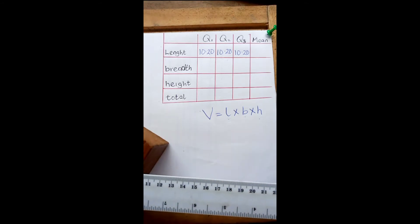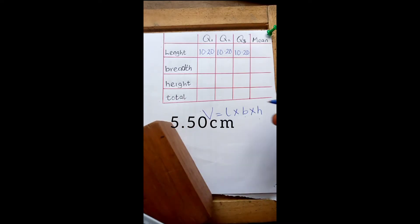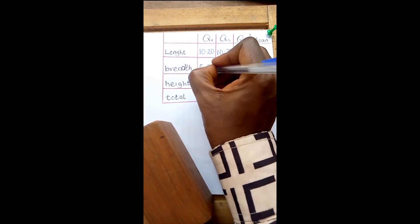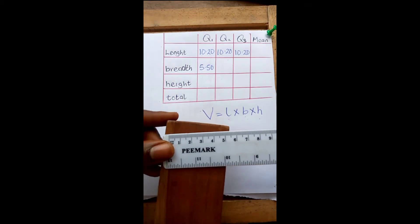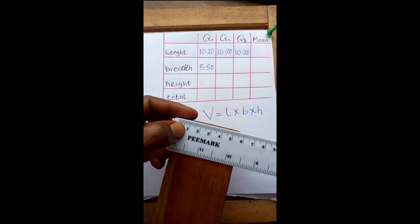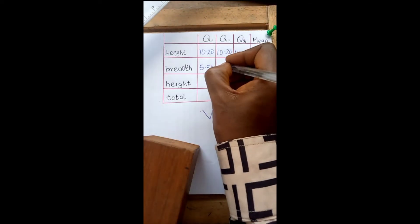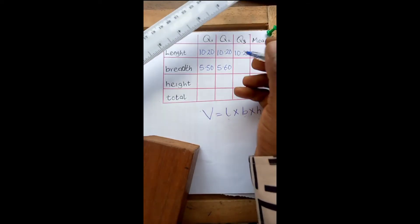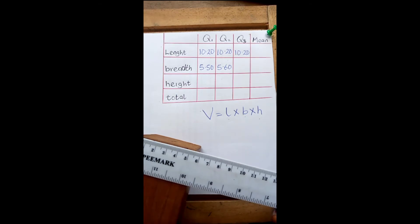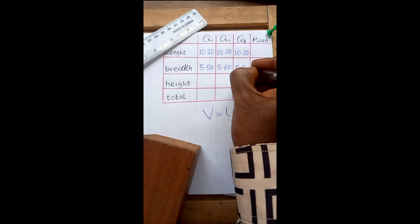Then to measure the breadth, place it close to it on this side and I have 5.5 cm — write 5.50 cm. I make sure I am recording it in two decimal places. Then place it again — I have 5.60 cm — and place it for the last time, this is 5.50 cm.